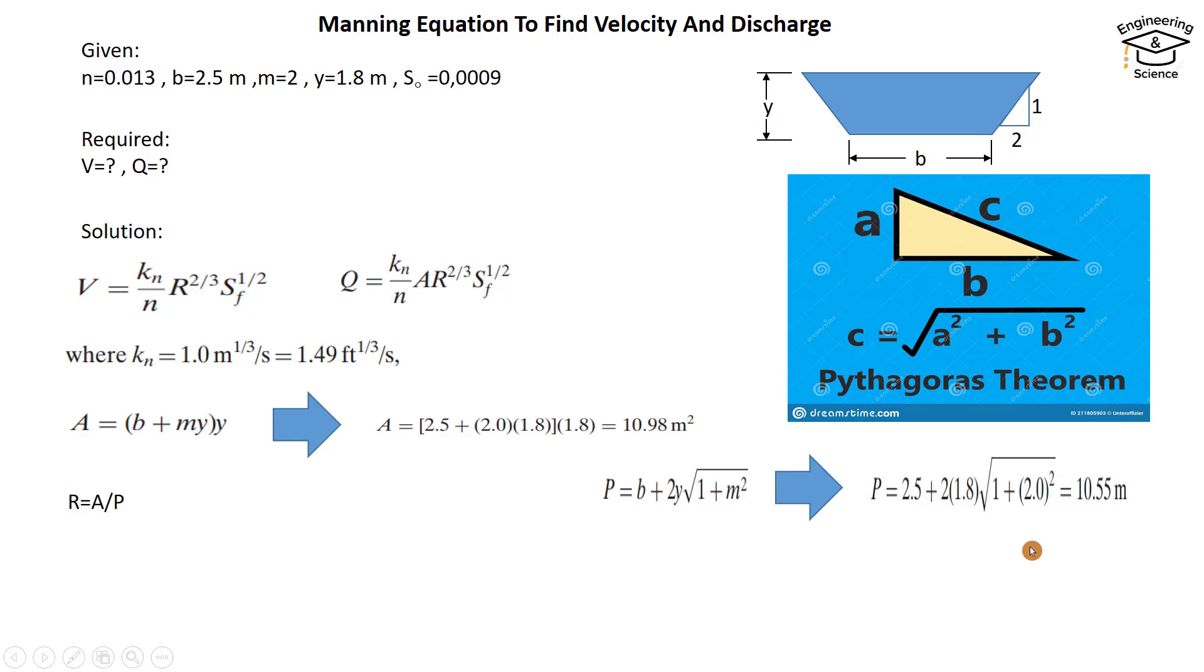Now we have everything to find hydraulic radius. So hydraulic radius equals area over P: R = 10.98 / 10.55, which equals 1.04 meters.